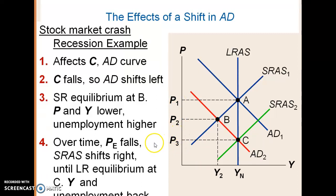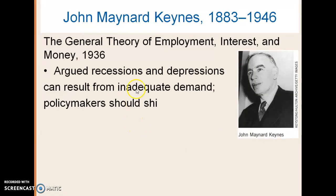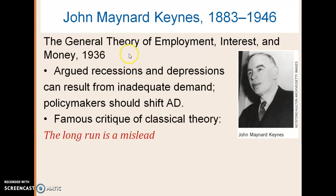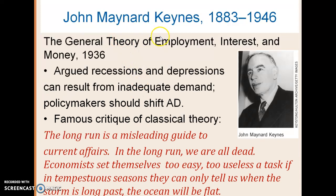The criticism of this comes from John Maynard Keynes. His critique of the classical model — just allowing time for prices to adjust — was that it really wasn't describing what was going on in the short run. The classical economists were saying, well, just give enough time and prices will adjust and you'll be at your full levels of output.